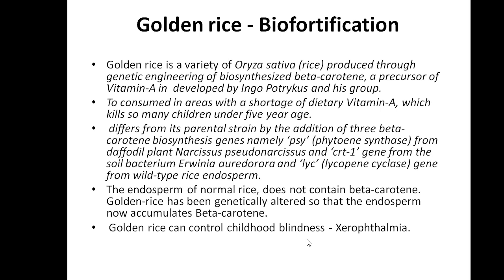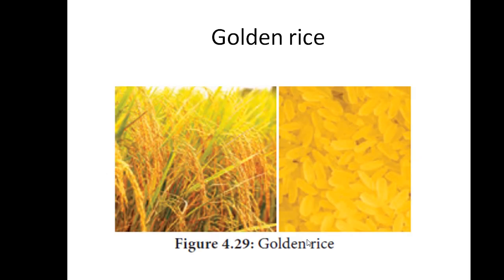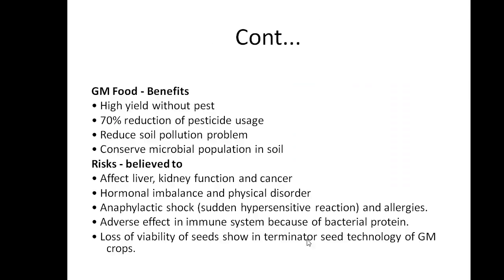The endosperm of normal rice does not contain any beta-carotene, but golden rice is genetically altered so the endosperm accumulates beta-carotene. This golden rice will definitely control child blindness like xerophthalmia in parts where children have a shortage of dietary vitamin A or suffer from malnutrition.